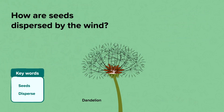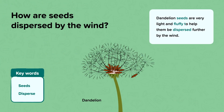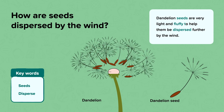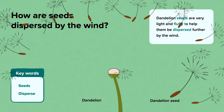This is a dandelion. Dandelion seeds are very light and fluffy to help them be dispersed further by the wind. If you ever see a dandelion in seed, try blowing it and see how far the seeds travel.